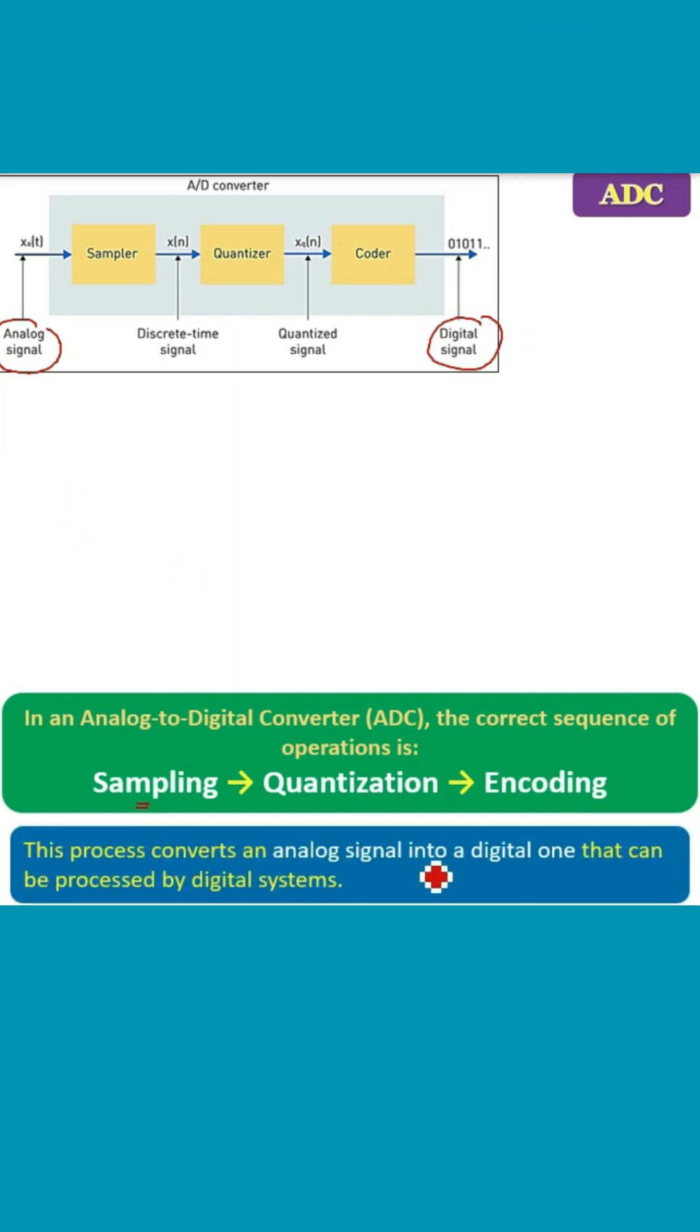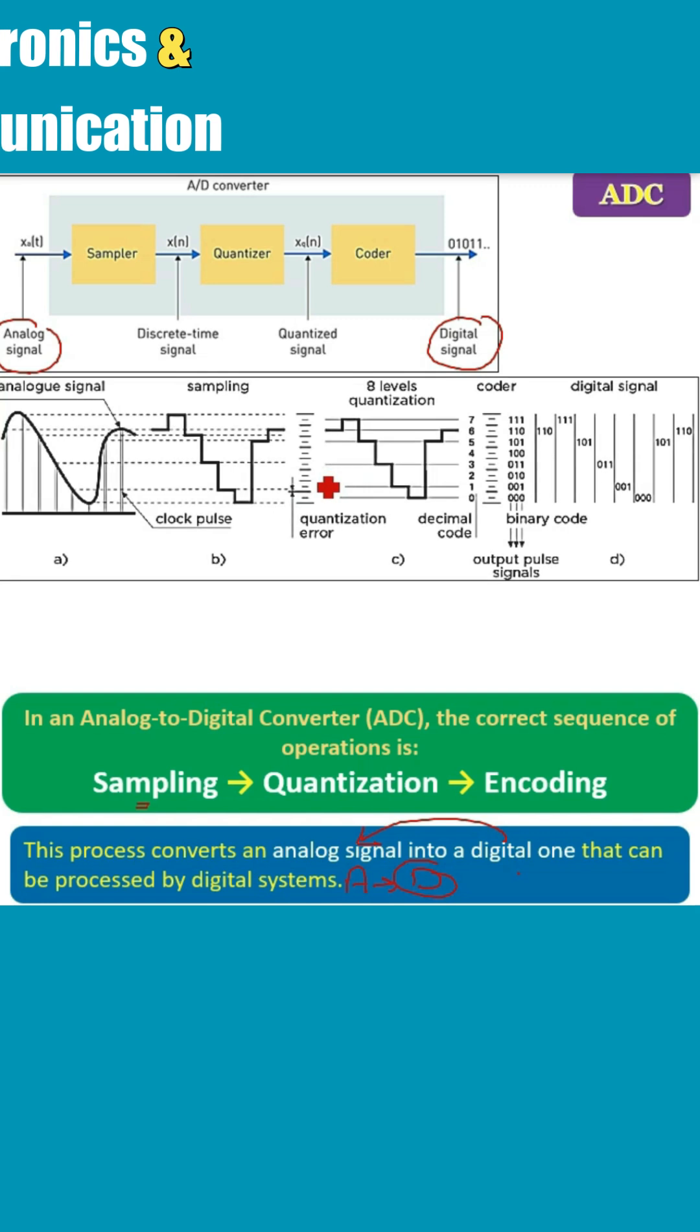The processor actually converts the analog signal into digital signal that can be processed by digital systems, because analog signals cannot be processed by a digital system. So you have to convert this incoming analog signal, which is the actual signal, into digital.